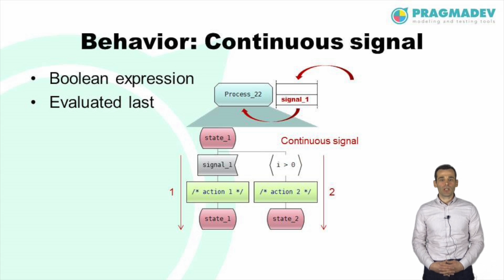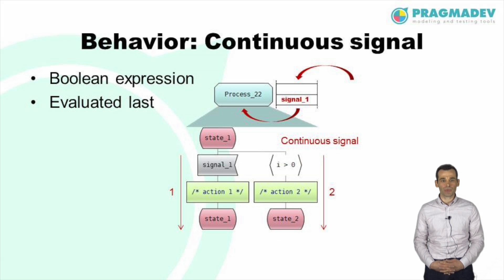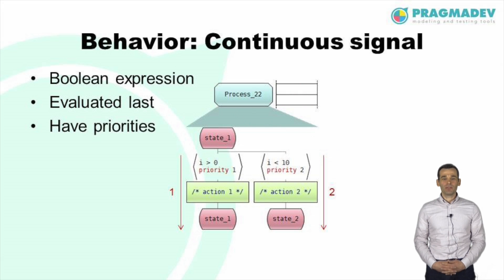Sometimes the situation may arise where a transition should be executed when a certain condition is fulfilled. A continuous signal is a boolean expression. If it evaluates to true then its associated transition is executed. The expression is evaluated only after all messages have been consumed, that is, the input queue of the process is empty. Continuous signals have priorities — the expression with the lowest priority number is evaluated first. In the example, action 1 will be executed before action 2 if the value of i is between 0 and 10.